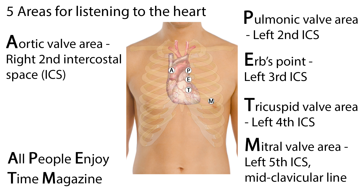When listening over the precordium, there are five precordial landmarks where you can best hear sounds from each heart valve. The sites of auscultation are actually not at the exact anatomic site, but the stethoscope is positioned downstream from the flow of blood through the valves. The aortic valve area is on the right side of the second intercostal space. The pulmonic valve area is at the left base of the heart, located in the second intercostal space. Erb's point is at the left third intercostal space, lying halfway between the base and the apex. The tricuspid valve area is at the left fourth intercostal space, and the final listening area is at the apex, normally at the left fifth intercostal space at the midclavicular line, called the mitral valve area.